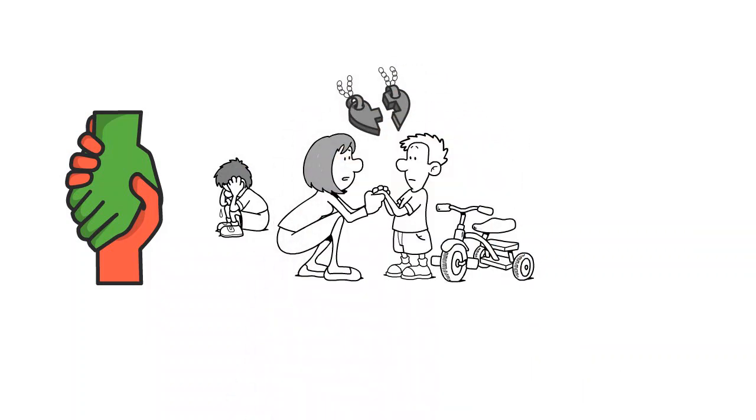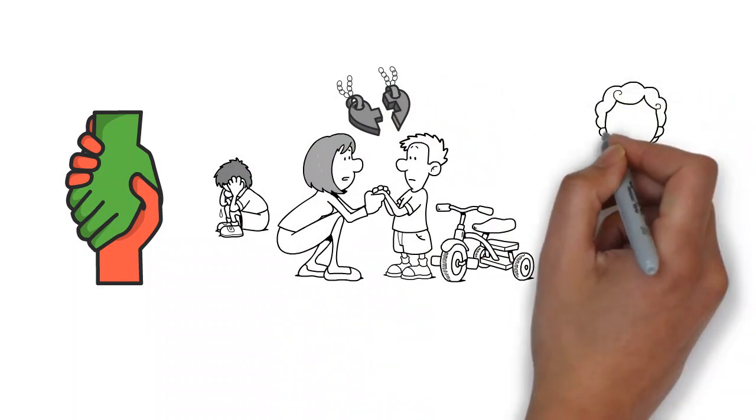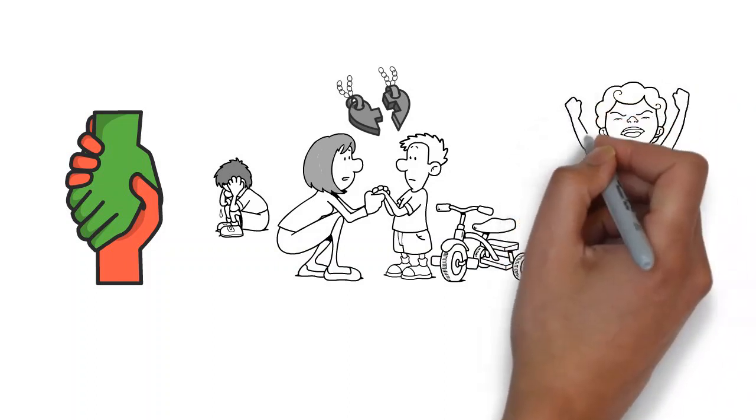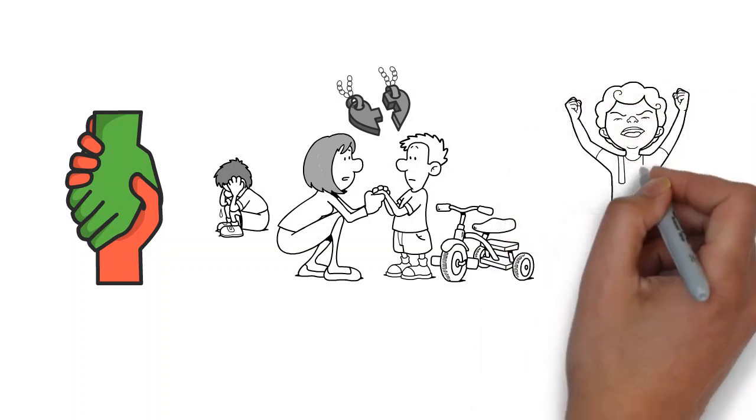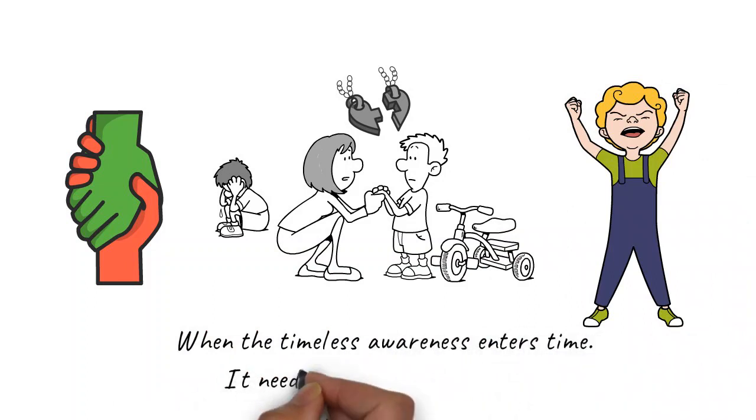And that secure attachment then gets radiated out throughout that child's history and throughout the time that awareness spends in time, because awareness is nonlinear. Awareness is timeless. When that timeless awareness enters time, it needs a form. It needs an ego, frankly.